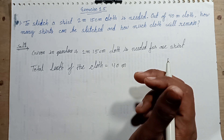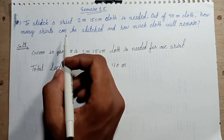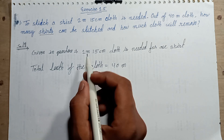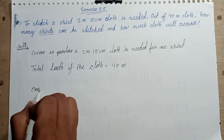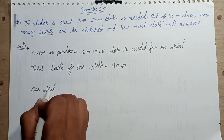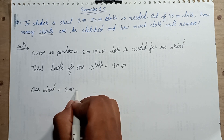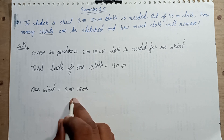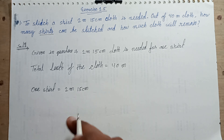Total length of cloth given is 40 meters. For one shirt, 2 meters 15 centimeters is required. We will convert this into centimeters.